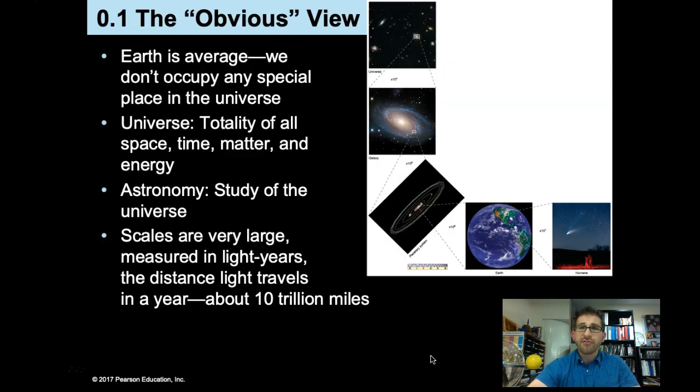So what is this obvious view? Well, from our night sky perspective, you may see things like stars, planets, comets. But that obvious view is as a result of our perspective here on Earth.